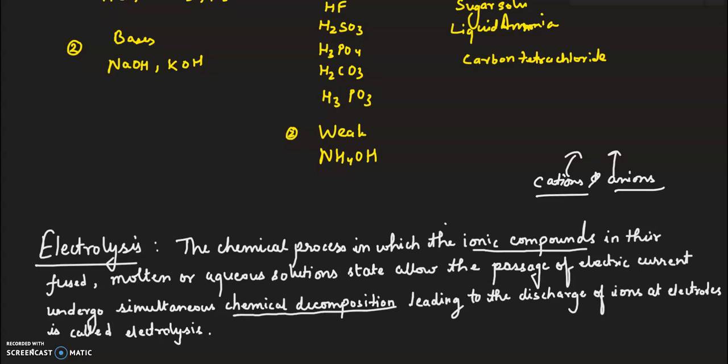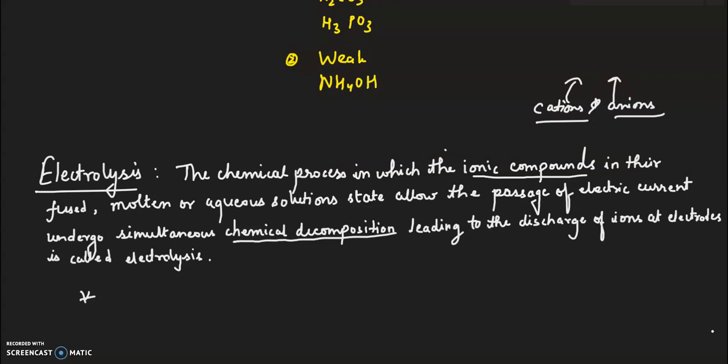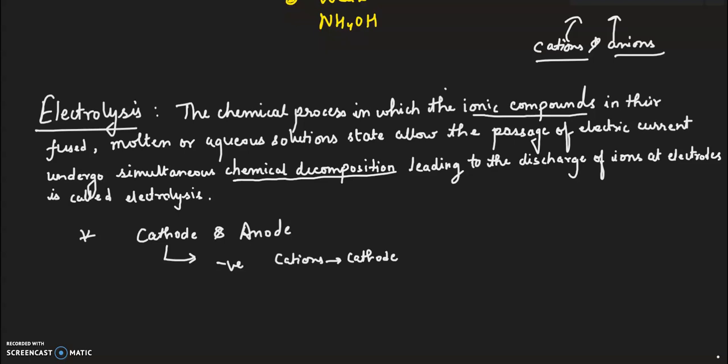The two terminals of the cell are called cathode and anode. Cathode is the negative terminal of the cell and cations migrate towards the cathode. The current leaves the electrolyte through the cathode. Anode is the positive terminal of the cell and anions migrate towards anode. The current enters the electrolyte through the anode.